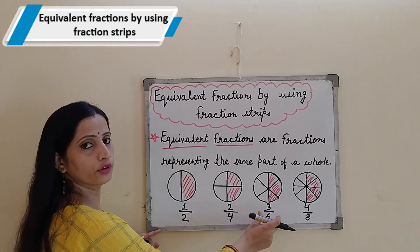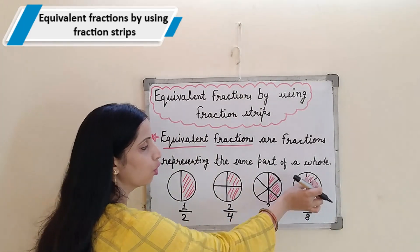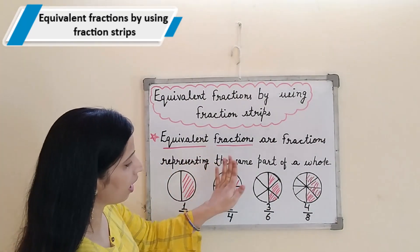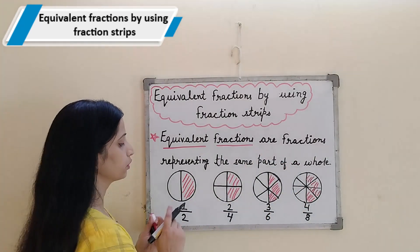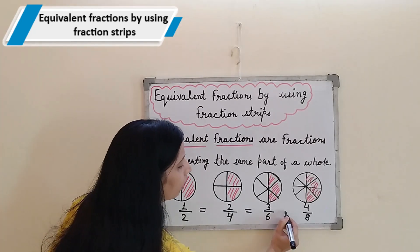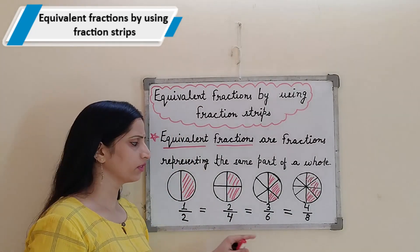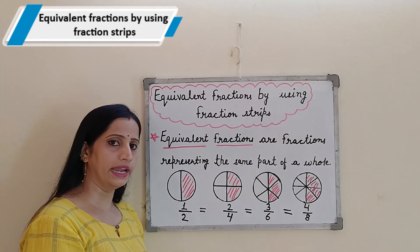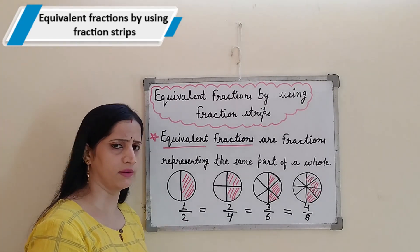So these all 4 fractions are representing the same part of a whole — that is half. So that is why these all fractions will be equal, or we call them equivalent fractions. We generally find the equivalent fraction by multiplying or dividing the numerator and denominator of the fraction by the same number.